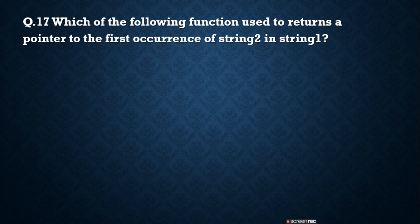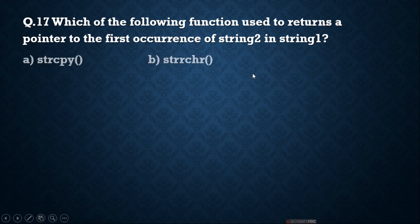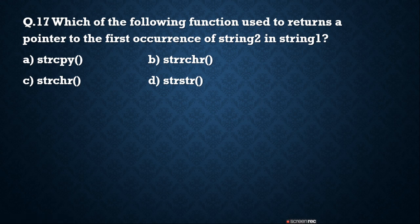Next question: which of the following functions is used to return a pointer to the first occurrence of string 2 in string 1? Suppose 'application' is your first string and 'app' is the second string. If you want to search where 'app' is present in 'application', at that time you can use this function. The correct answer is strstr — it is used to check whether a substring is present in a parent string or not.